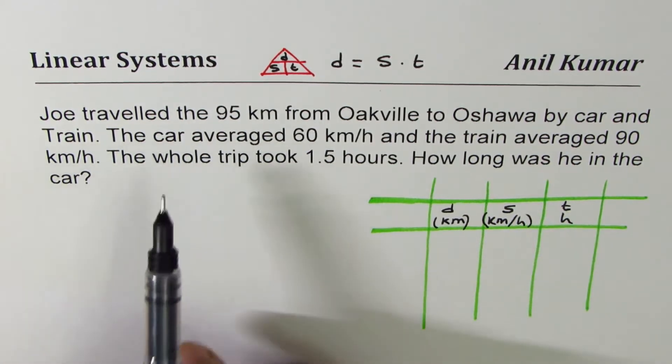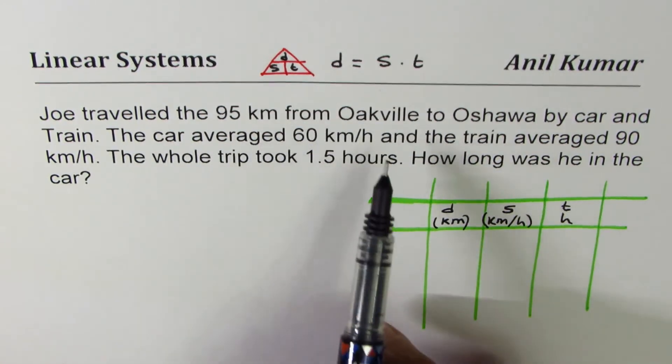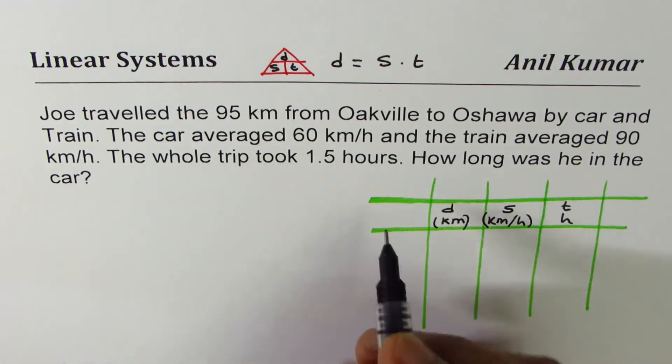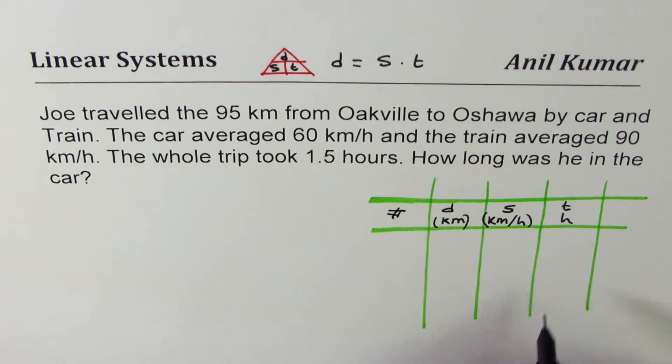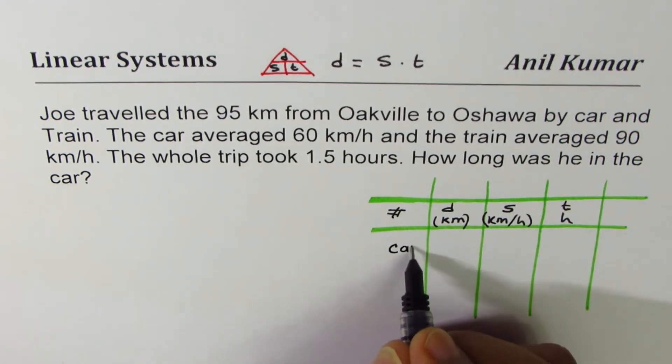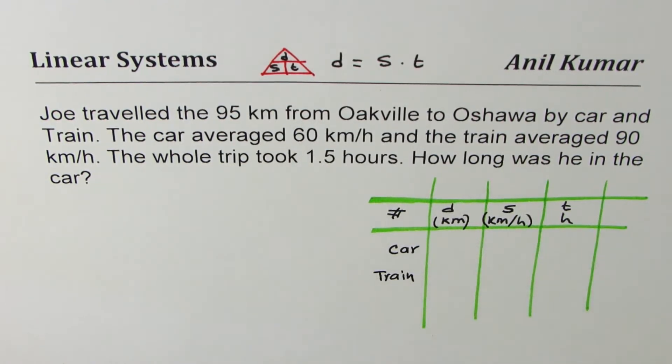Now let's read the question once again. Joe traveled the 95 kilometer from Oakville to Oshawa by car and by train. So number of ways in which this journey is performed is by car and train. So we'll write car here and then train.